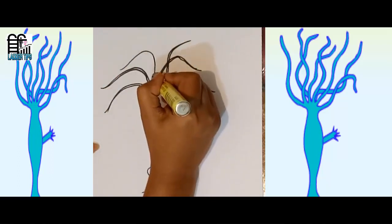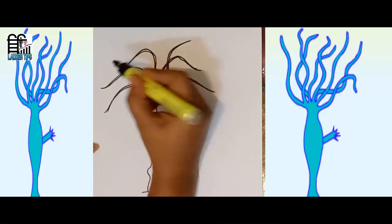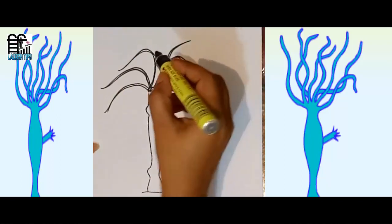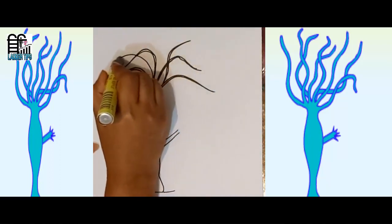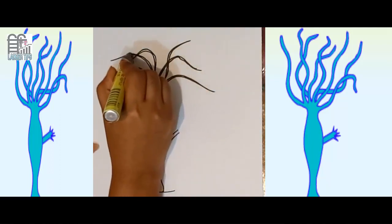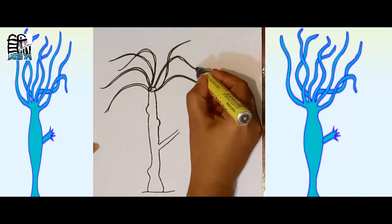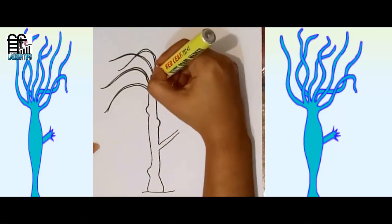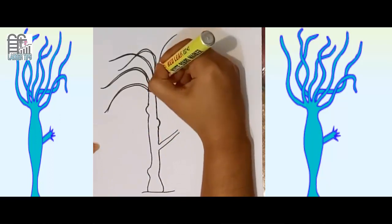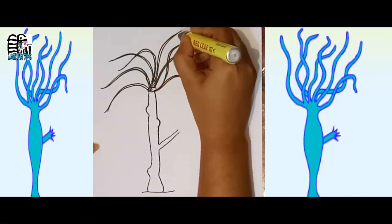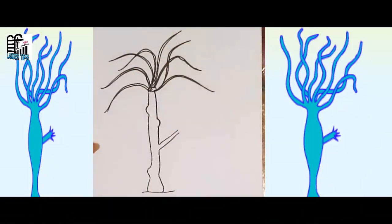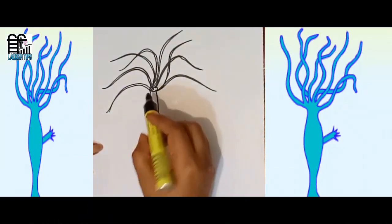Now I'm drawing the tentacles. These are the part of hypostome. It is actually your choice how many tentacles you would like to draw. Well, I have finished the tentacles there.